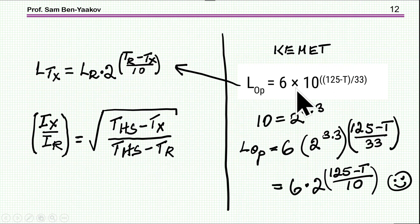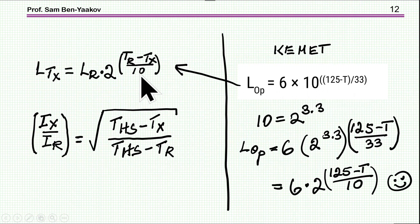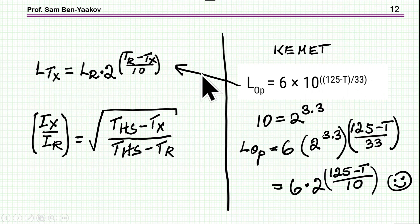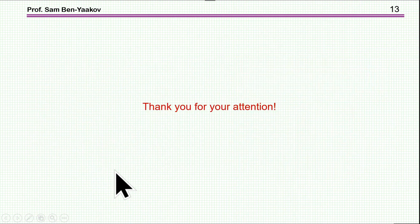Kemet expresses this lifetime equation differently, as 10 to the power of (125 minus T) over 33. But since 10 equals 2 to the power of 3.3, these two forms are exactly the same equation. The second equation I derived gives the current for a given temperature, knowing the current at a reference temperature for the same lifetime. Thank you very much for your attention. I hope you found this of interest and that it will be useful to you in the future.